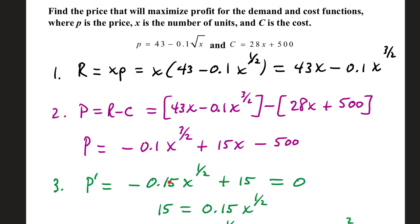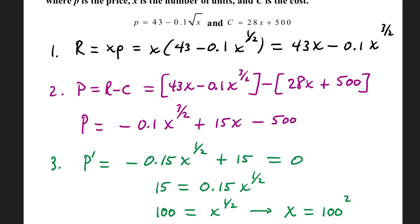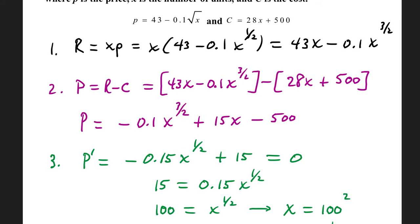I'm going to take this negative term over to the right. It will go from negative to positive after it's moved. Divide both sides by 0.15. 15 divided by 0.15 is 100, x to the 1 half. If we square both sides, that will eliminate the 1 half. x equals 100 squared, which is 100 times 100, or 10,000 units.